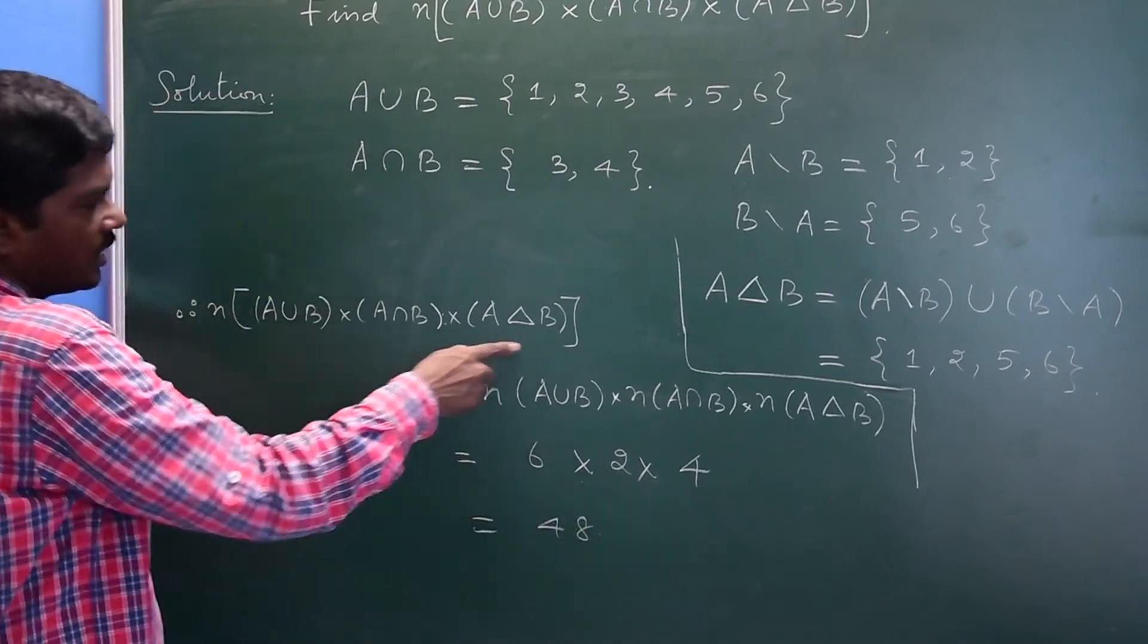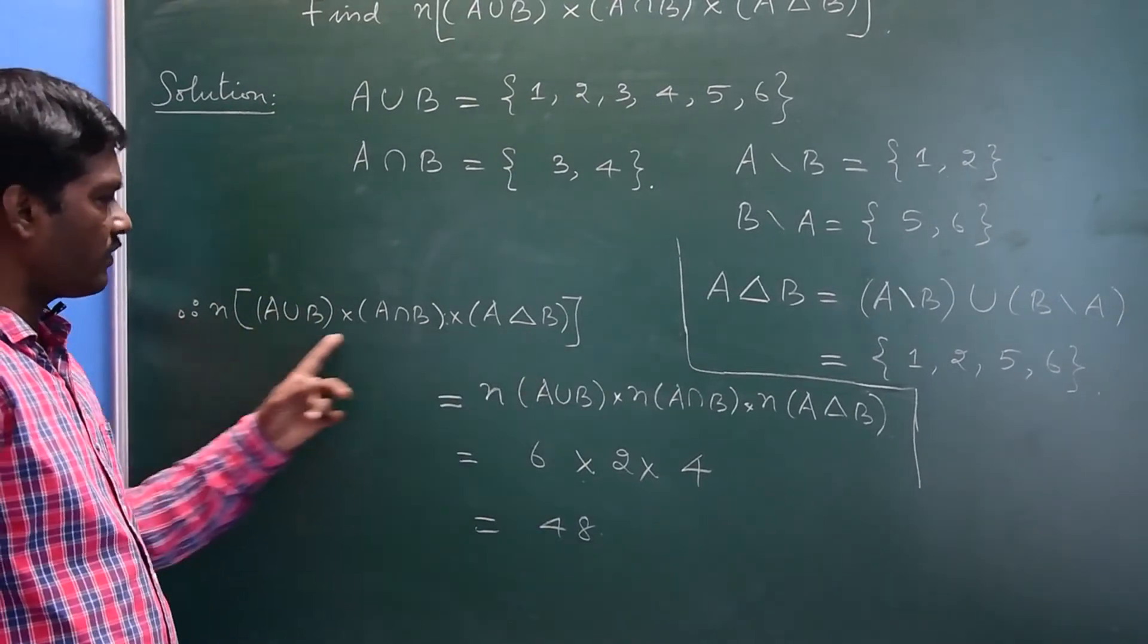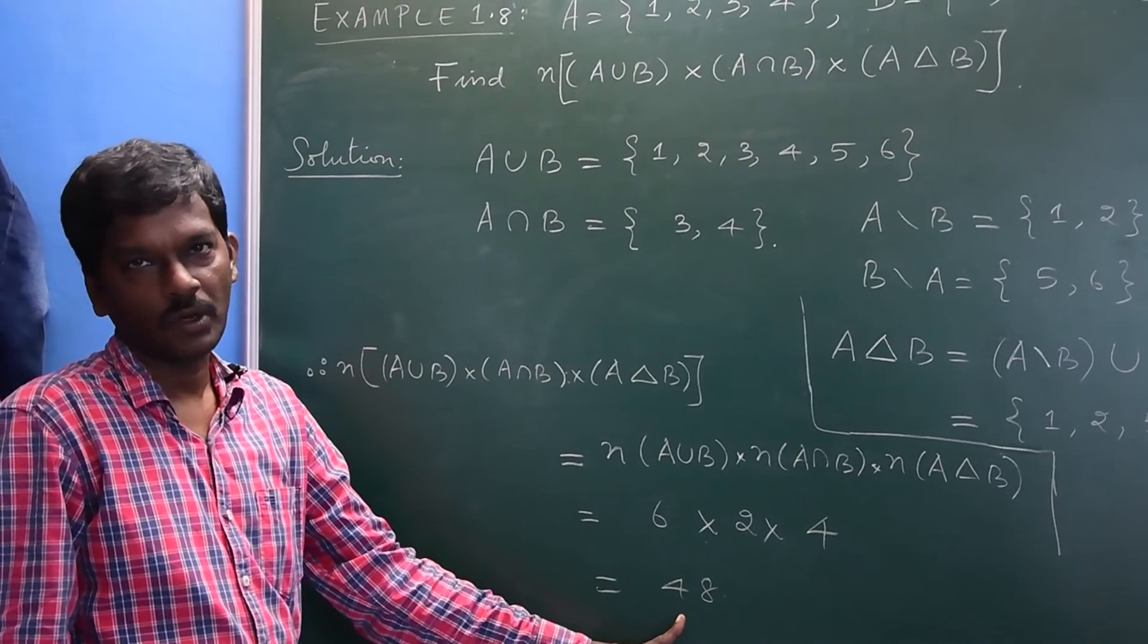So the cardinality of this set is the number of elements in the set, which is 48.